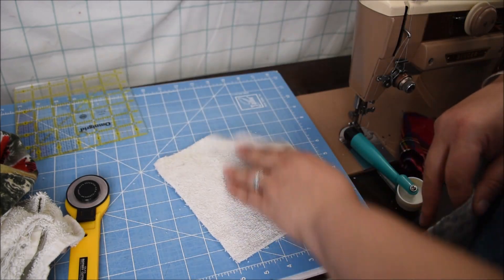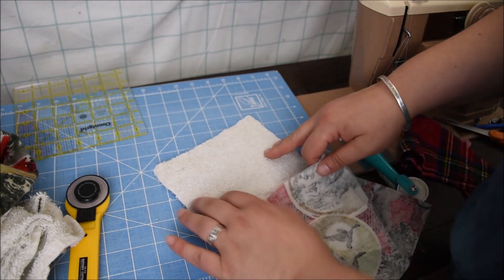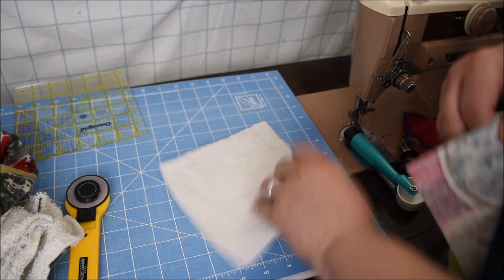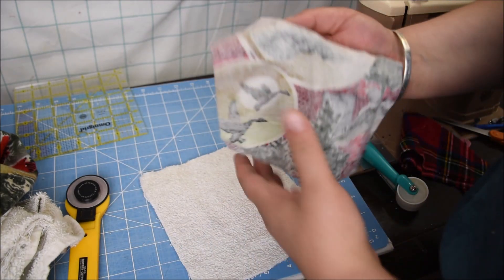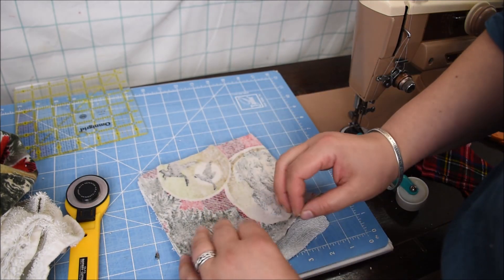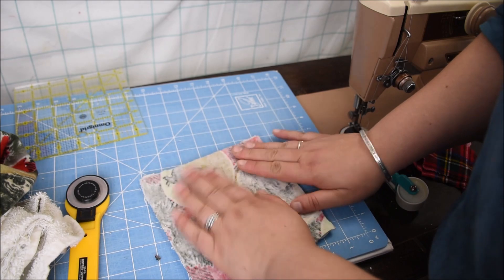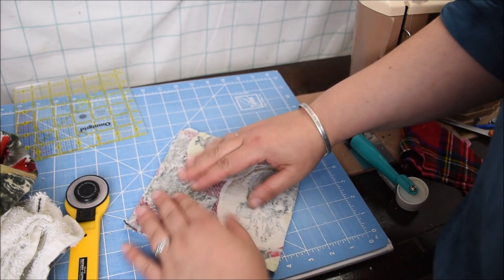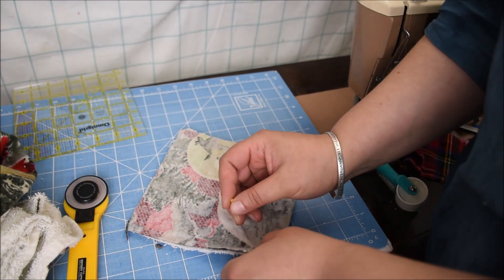So I'm just trying to decide which side of the towel that I want facing out. There's like a more fluffy side and a more coarse side, and in this case I want the fluffy side on the outside. So I'm going to put that facing the right side of the flannel and then I'm going to put some pins in.